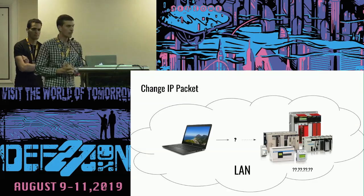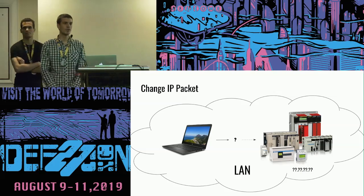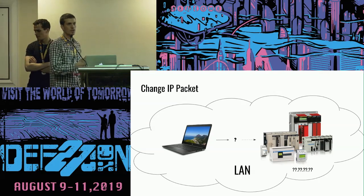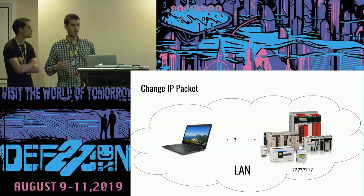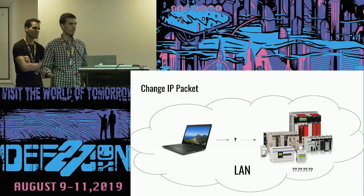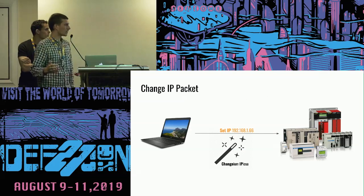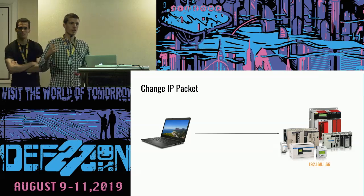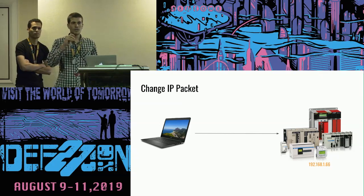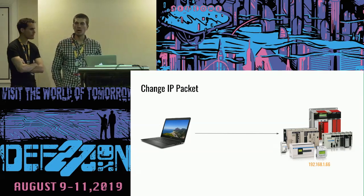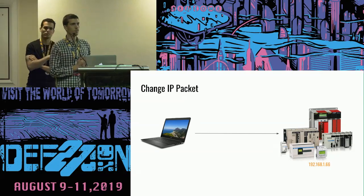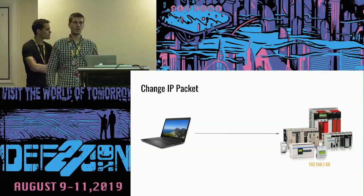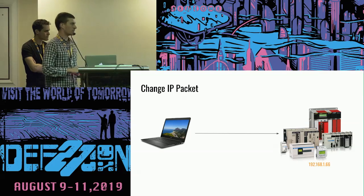Change IP packets — think of the situation where you're buying a new device and you want to plug it into a network. The device has no network settings, but you plug it in and somehow you're able to communicate with it. When you plug in your device, you send a magic change IP packet to the device, and suddenly the device gets a new IP address and you're able to communicate via layer three, the IP layer. You need to know the MAC address of the device, but since MAC addresses are relatively easy to obtain by sniffing ARP responses, we assume it's no problem.